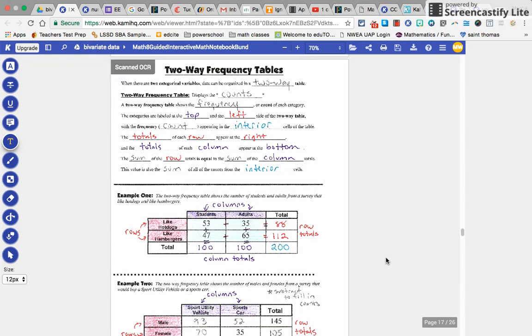Alright, so when we're doing two-way frequency tables, when there are two categorical variables, data can be organized in two-way tables. Two-way frequency tables display the counts. A two-way frequency table shows the frequency or count of each category.